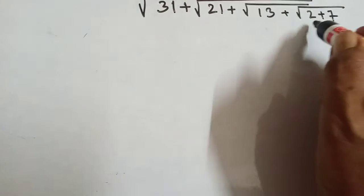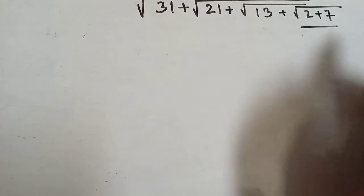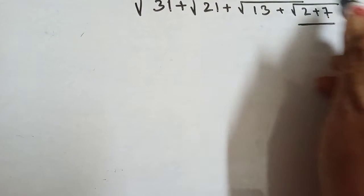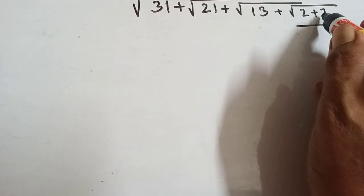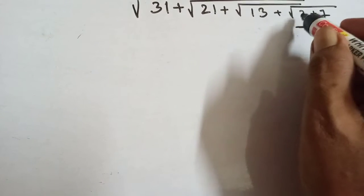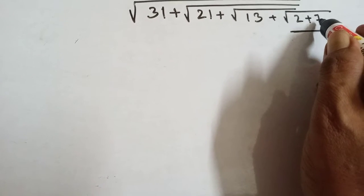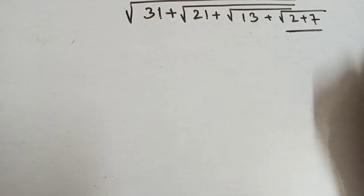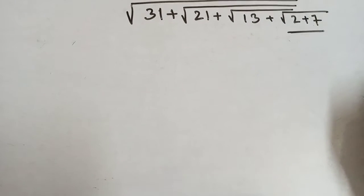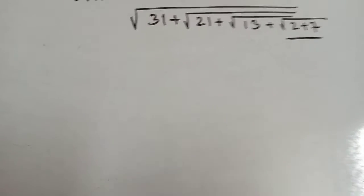We will start from here. Root under 2 plus 7, that means 2 plus 7 is 9. Square Root of 9 is 3.